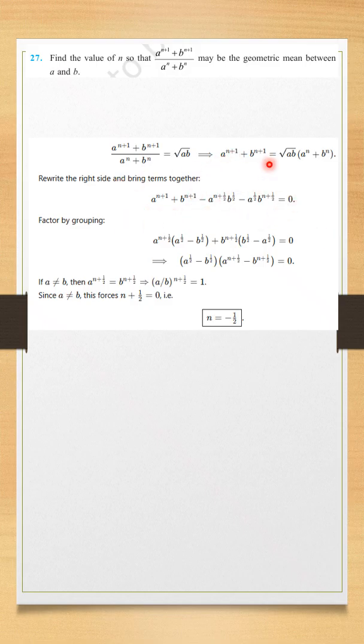Our expression will be of this type. Basically, root a is a raised to the power 1 by 2, and root b is b raised to the power 1 by 2. So, when we multiply, it will become n plus 1 by 2.